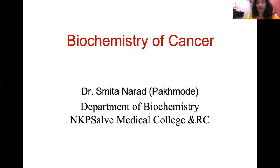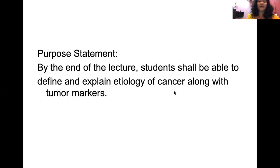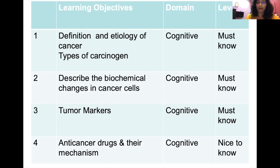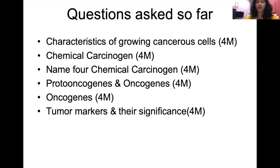At the end of this lecture you should be able to define and explain the etiology of cancer along with tumor markers. Our learning objectives: first we will learn the definition and etiology of cancer, covering types of carcinogens and their mechanisms. Then biochemical changes in cancer, tumor markers, and a few anti-cancer drugs and their mechanisms. Questions asked so far emphasize chemical carcinogens, proto-oncogenes, oncogenes, and tumor marker significance.